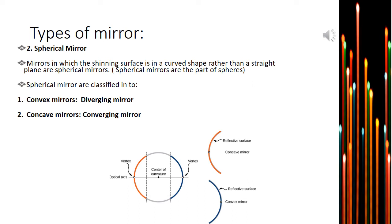The rays of light that fall on a spherical mirror meet at a point called the principal focus or focus. The rays of light falling on a concave mirror converge, and hence this mirror is called a converging mirror. While the rays of light from a convex mirror diverge into different directions, hence it is called a diverging mirror. We will discuss converging and diverging mirrors further with examples.